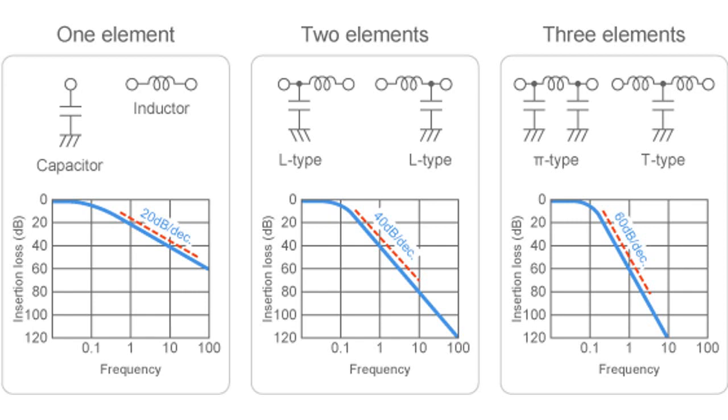The basic filtering circuits provide different insertion loss rates: 20 dB per decade for C and L filters, 40 dB per decade for CL and LC filters, and 60 dB per decade for Pi and T filters. However, the insertion loss rates of the filters are strongly dependent on the impedances seen at either ends of the filter circuit.